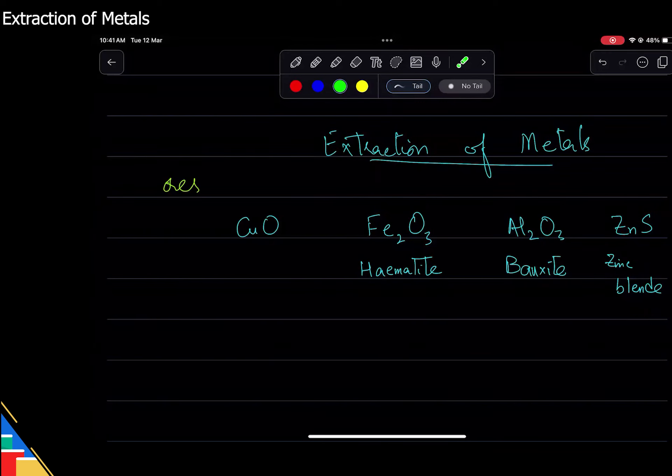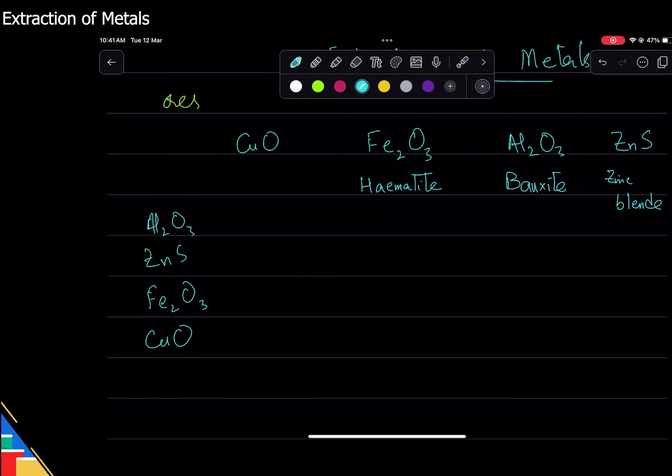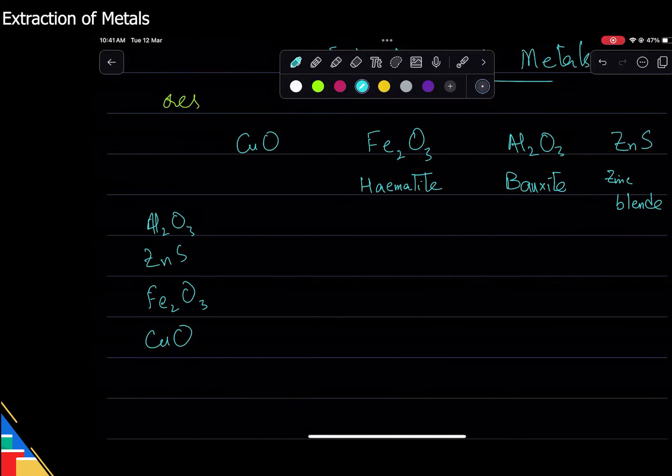Okay, so how do we do it? Do you see a pattern in this? Is there some order in which you can put them? So for example, if I say I'm going to put them in this order: aluminum, then zinc, then iron oxide, then copper oxide. Do you see a pattern here? Is there any trend? They're all in descending order of reactivity. Very good, they are exactly in the order of their reactivity. Aluminum is the most reactive and copper is the least reactive in all four of these.